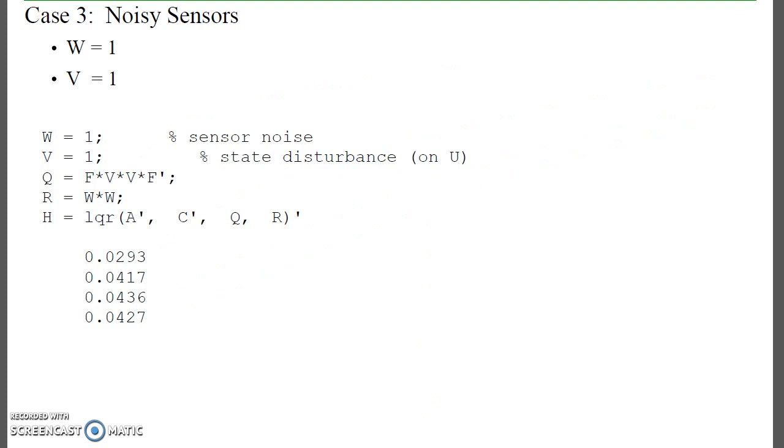The third case, if I have really lousy sensors, the sensors basically become zero. I've got lousy sensors, so I basically disregard the outputs. They're not zero. There is some information there, but it's very small.